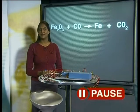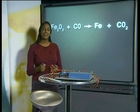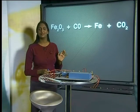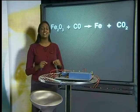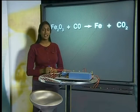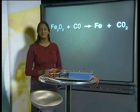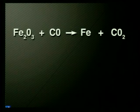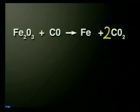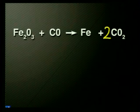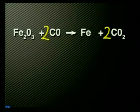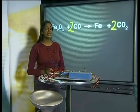So how do we fix it? Remember, the one thing we cannot do is to change the formula of any of these substances. The only thing we can do is to show that a different number of molecules are reacting. We do this by writing a number in front of the formula. At first glance, it looks like we need to double the number of oxygen atoms in the product by placing a 2 in front of the CO2. Now there are 4 oxygen atoms on each side of the equation, but this has caused the number of carbon to change to 2 as well. To balance the carbons, I need to place a 2 in front of the CO. But this changes the number of oxygen atoms again. This strategy is obviously not working.